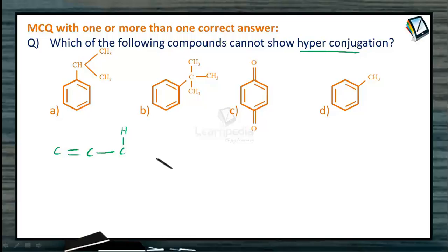So what is the compulsory condition? Presence of alpha hydrogen atoms is a compulsory condition for an organic compound to exhibit hyperconjugation.